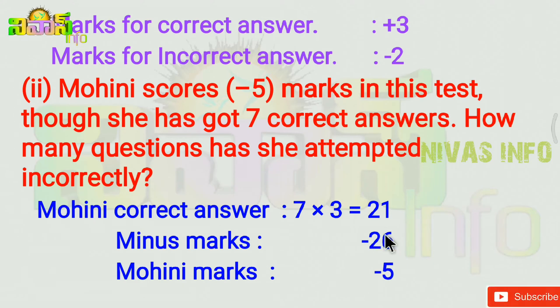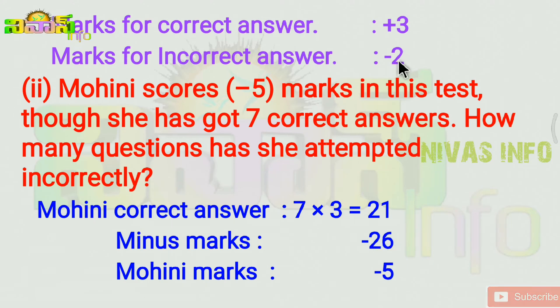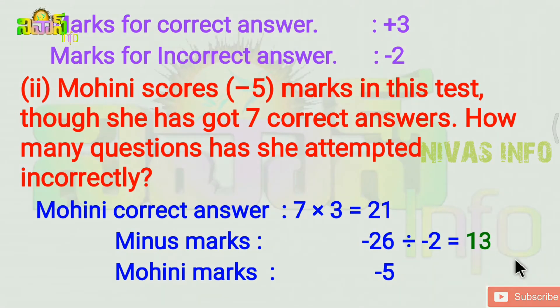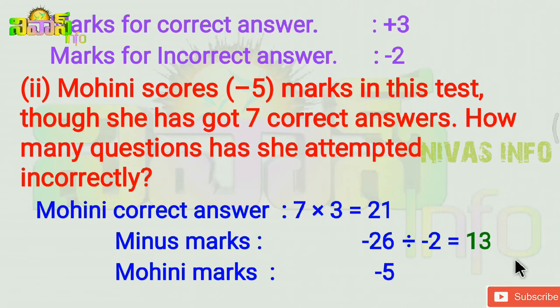If she has minus 5 marks in the test and correct answers give her 21 marks, then marks lost to incorrect answers is 26. Mohini's incorrectly attempted answer count is 13.